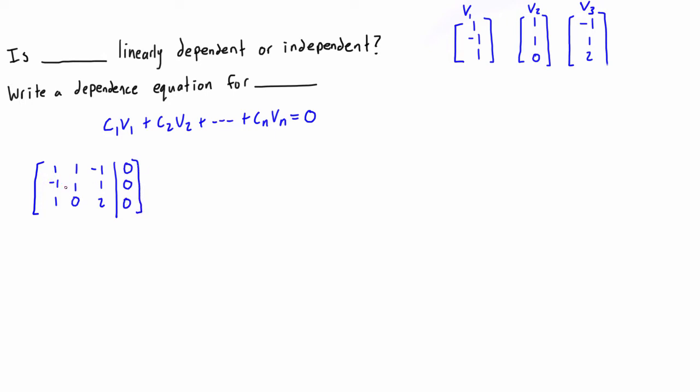What we do is we want to try to apply our elementary row operations to get this thing into reduced row echelon form. And if we can do that and there is no free variable, then the set of vectors is independent. And if we go through and we find out that there is a free variable, then the set of vectors is dependent.